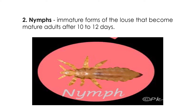Number two: the nymphs. Nymphs are immature forms of the louse that become mature adults after ten to twelve days. This is all about the second stage of lice, the nymphs.